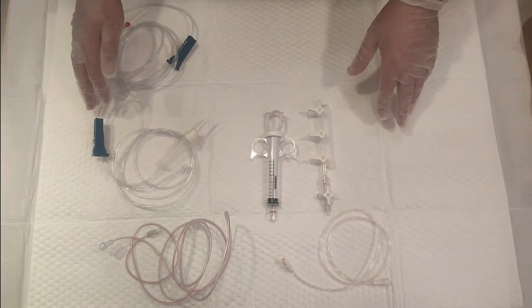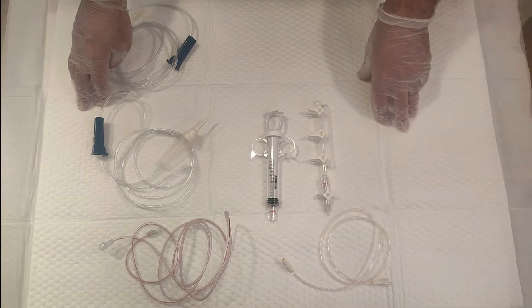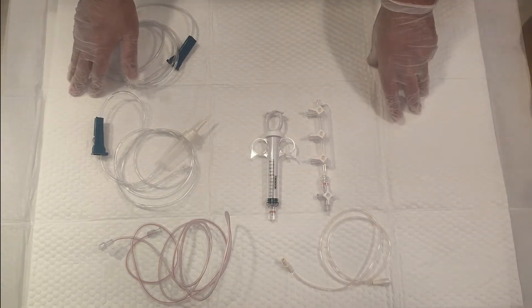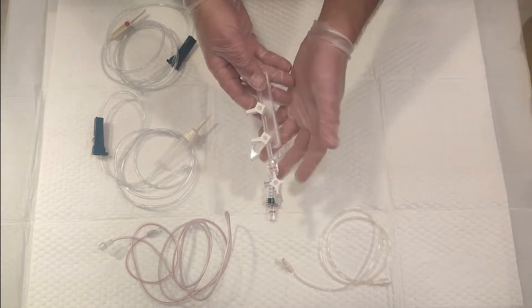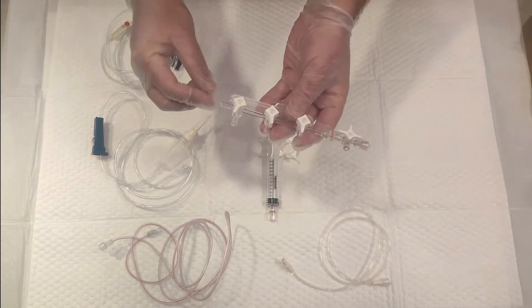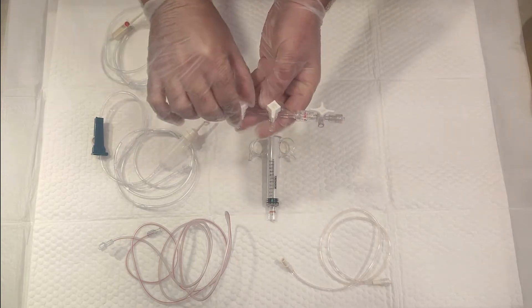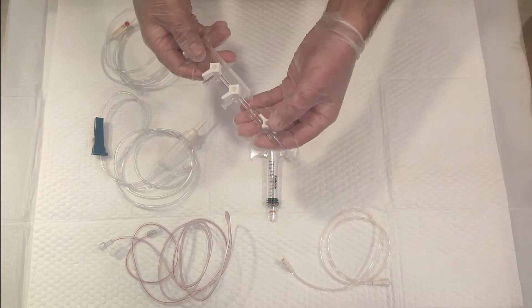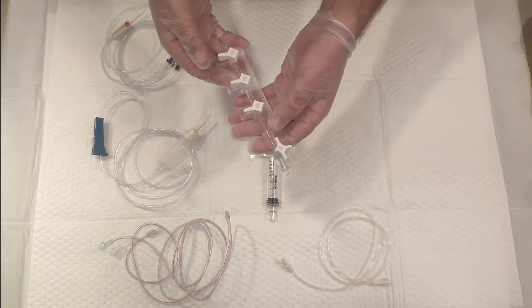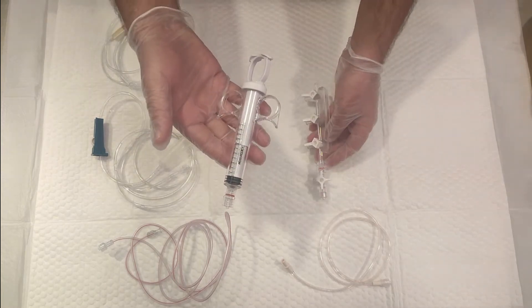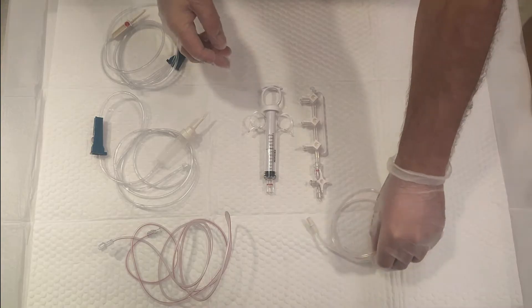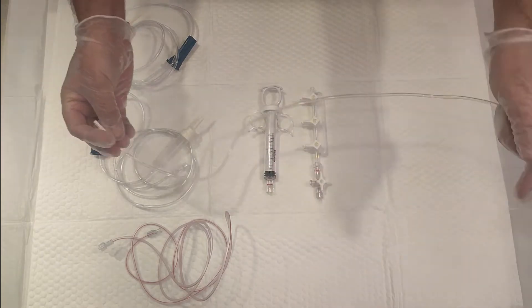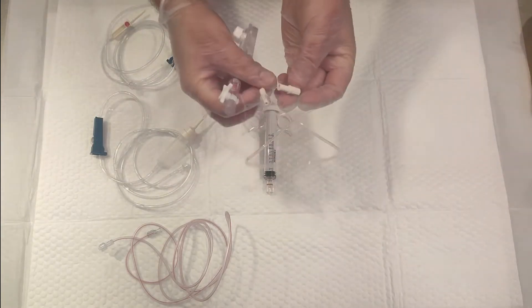This is a manifold. It's called a manifold because there are multiple line connections in this set. It comes with a three-way. This has high-pressure sealant to inject the contrast, and there are certain tubings that come along with this. This is a tube extension that can be attached.